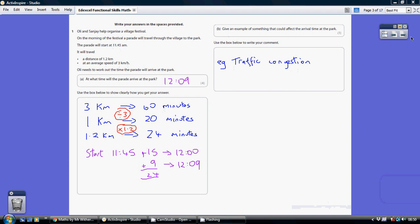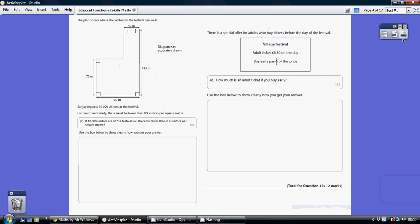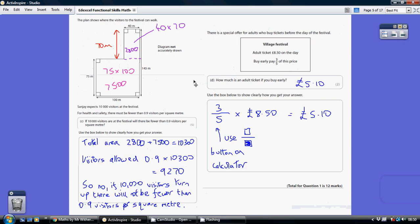Now for part C, we need to start off by working out how many square meters we've got. So I've done that by breaking this shape down into two rectangles by doing a little dotted line along here. Now this rectangle we can see has got a base of 100 and a height of 75. So the area of that rectangle there is 75 times 100 which is 7,500.